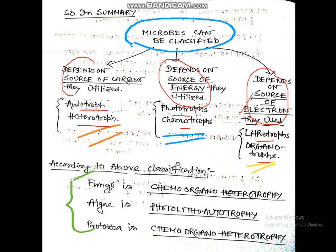According to the above classification: Fungi is chemo-organo-heterotroph. Algae is photolitho-autotroph. Protozoa is chemo-organo-heterotroph.